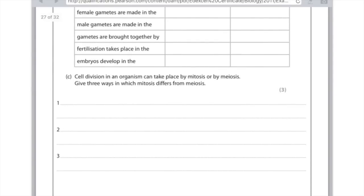Cell division in an organism can take place by mitosis or meiosis. Give three ways in which mitosis differs from meiosis. Okay, so the first obvious thing is that mitosis is used in growth, whereas meiosis is used in sexual reproduction. Second point is that mitosis produces clones, whereas meiosis produces variation, so genetic variation. And third point, mitosis only involves one round of cell division, whereas meiosis involves two rounds. You could also, if you wanted to, say that the chromosome number stays the same in mitosis, whereas it halves in meiosis.